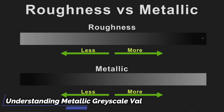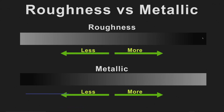Before we start talking about Material Masks, there is one very important concept that you need to understand. In the past, whenever we've talked about roughness, as we move further over here to the white, it actually gives us less roughness, and as we move our slider over to the black, it gives us more. But when it comes to metallics, this is actually reversed — as you move further to the white, it's going to give you more metallic, and you're going to get less metallic as you move further into the black.